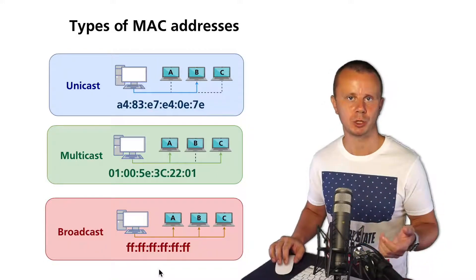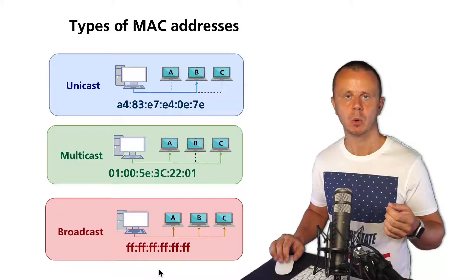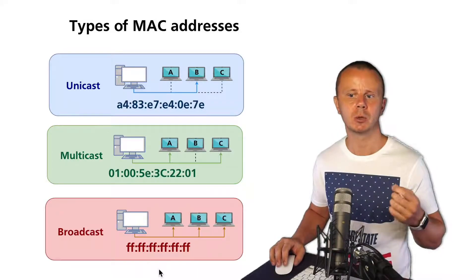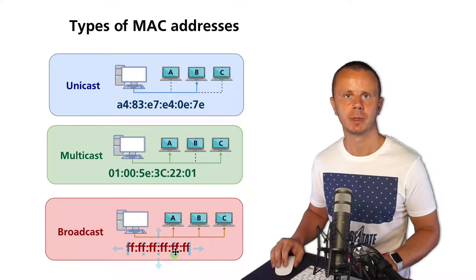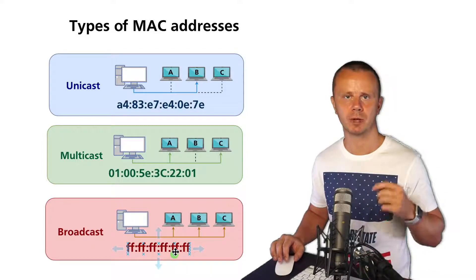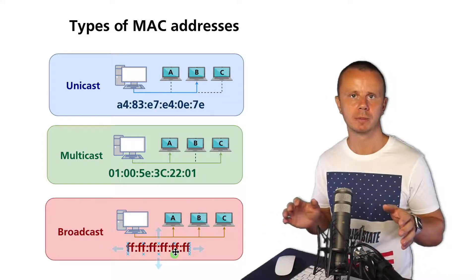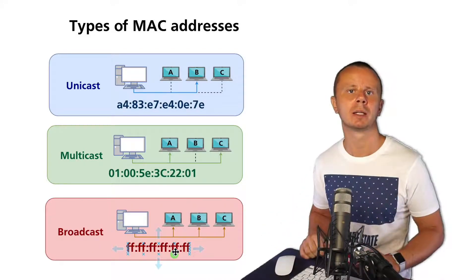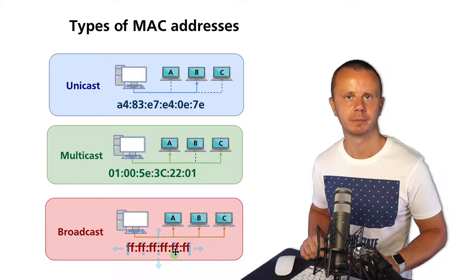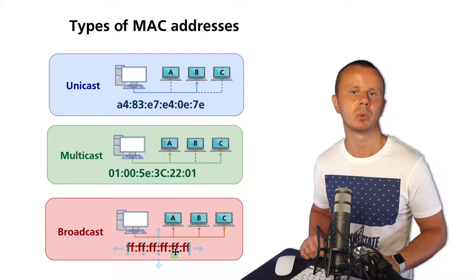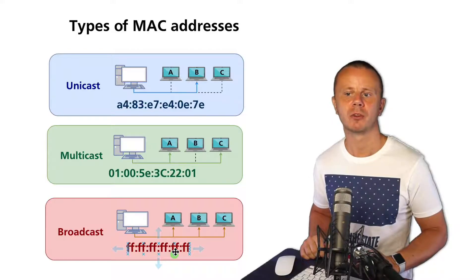If, for example, a switch receives a frame with this destination MAC address, it will send such frame to all ports except the port where this frame was received from. So that is the behavior of the switch when it receives a frame with a destination broadcast MAC address.